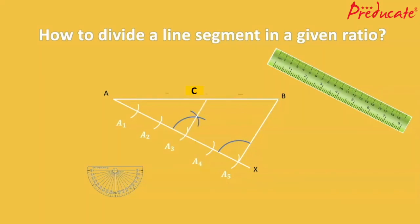Now join A3 and point C. Finally, AB is divided into the required ratio of 3 is to 2.